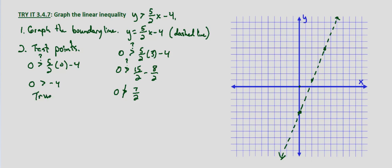So we would shade on the side that makes it true. Which would be this left-hand side. So we just shade on that side of the line.